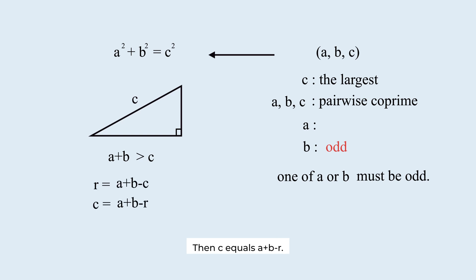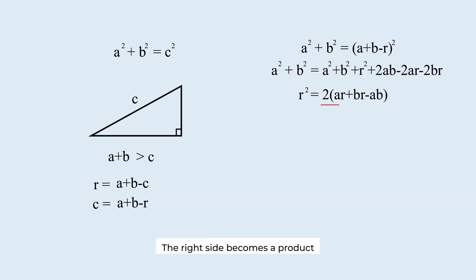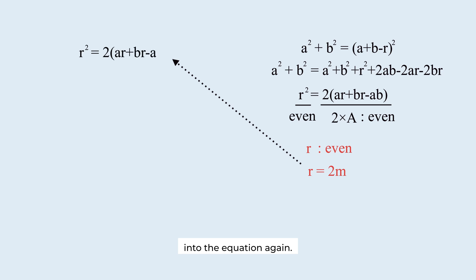Then, c equals a plus b minus r. Substitute this into the Pythagorean theorem and simplify. The right side becomes a product of two and another number. So, it's even. The left side must also be even. The square of a number is even only if the number itself is even. So, r must be even. Let's write r equals 2m and substitute this into the equation again.